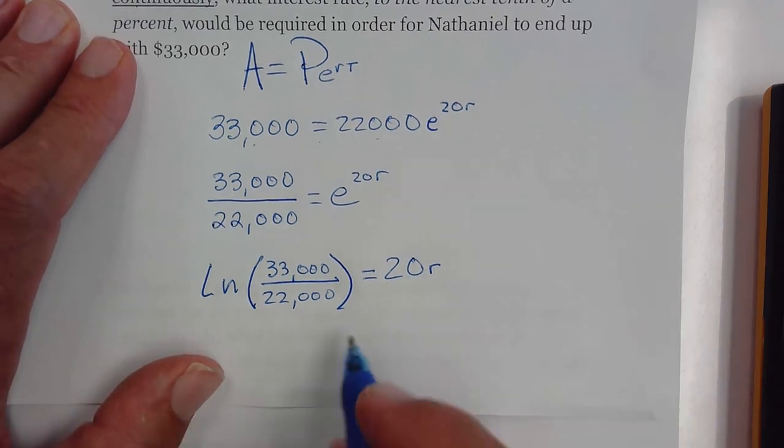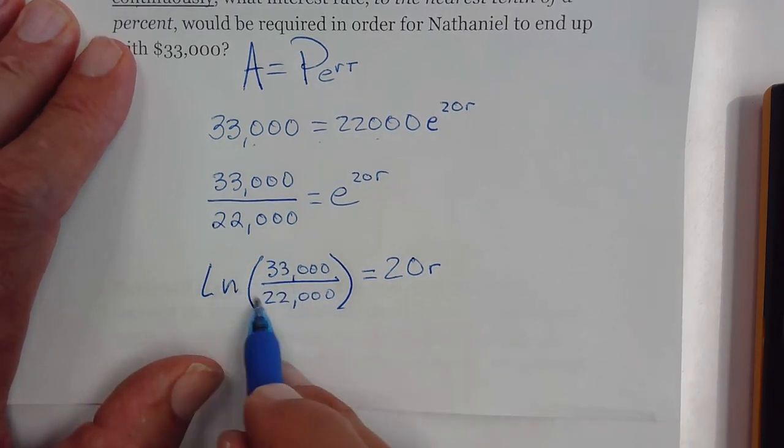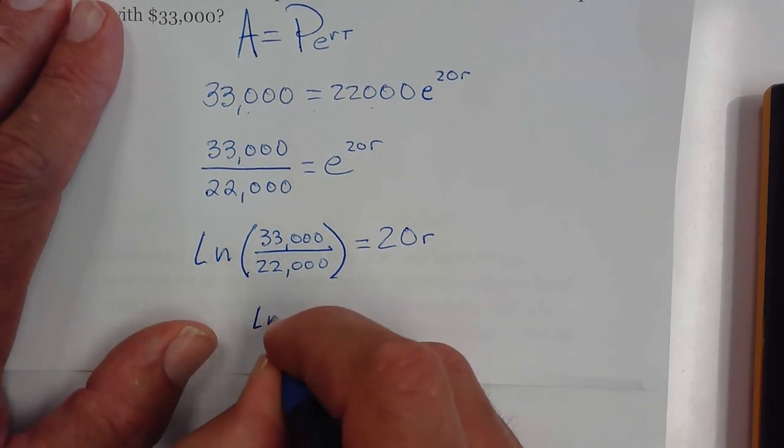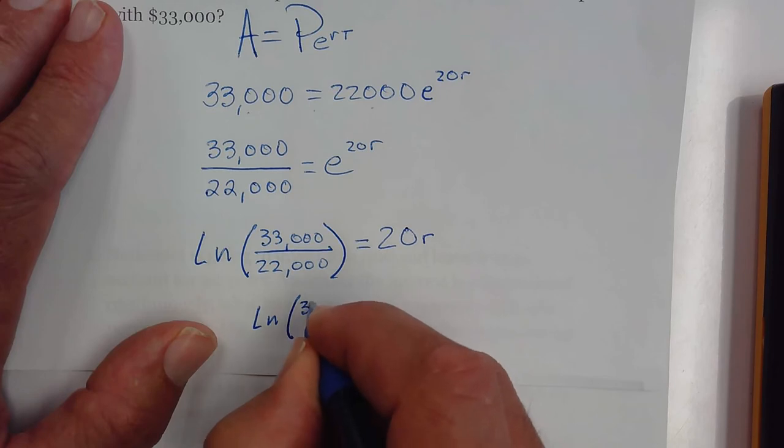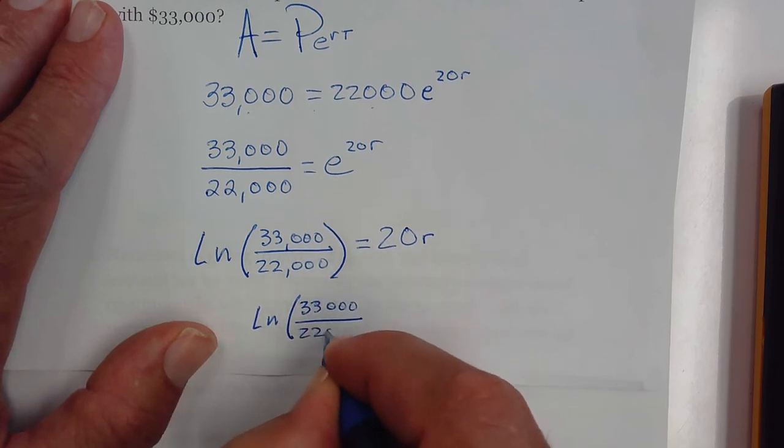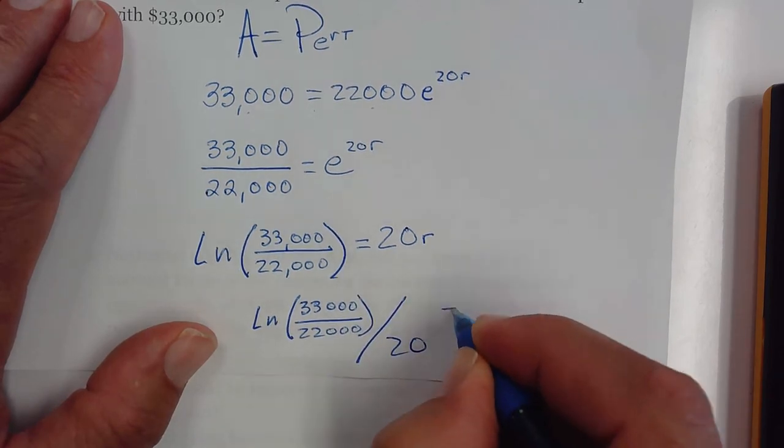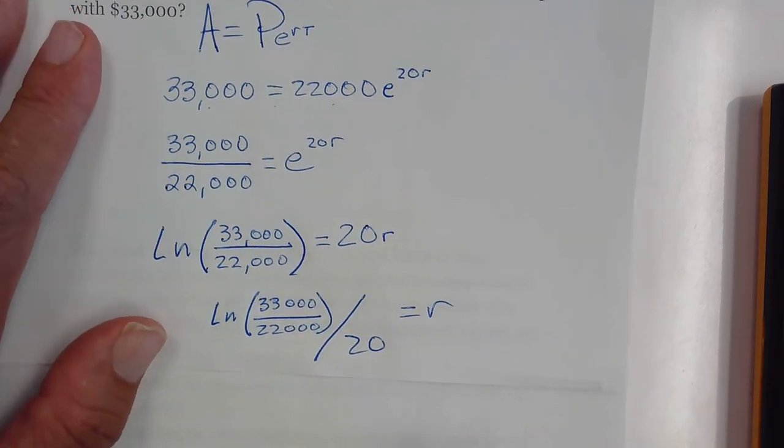And now the last step is you're going to take this natural log value and divide it by 20. So it would be natural log of 33,000 divided by 22,000, all divided by 20, and that's going to equal your rate.